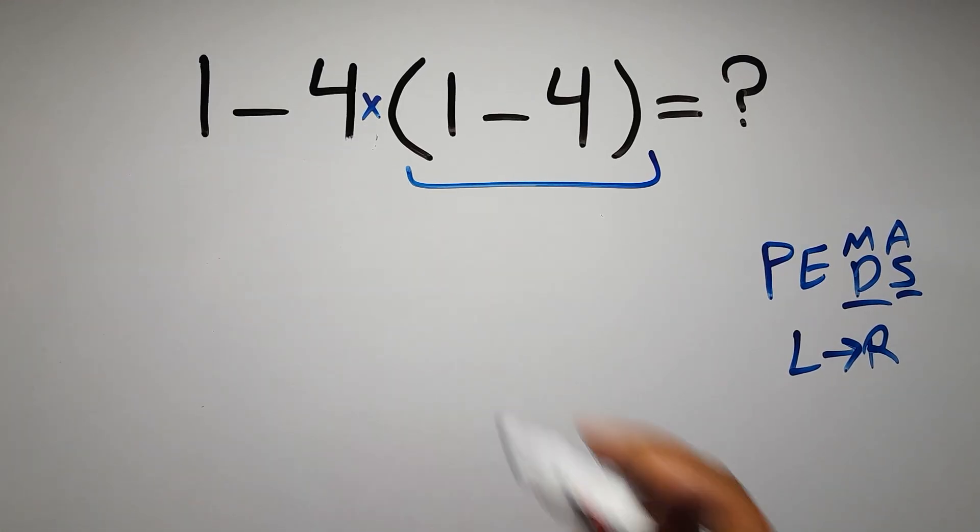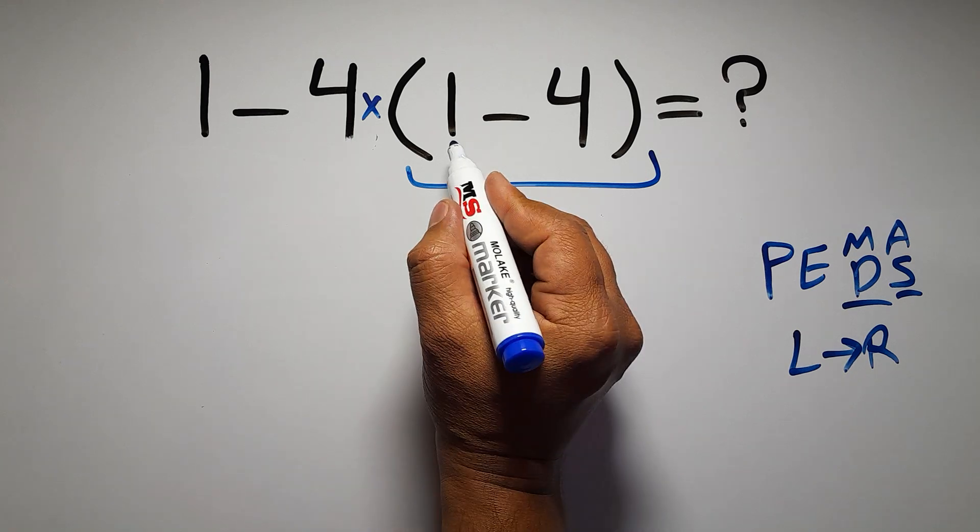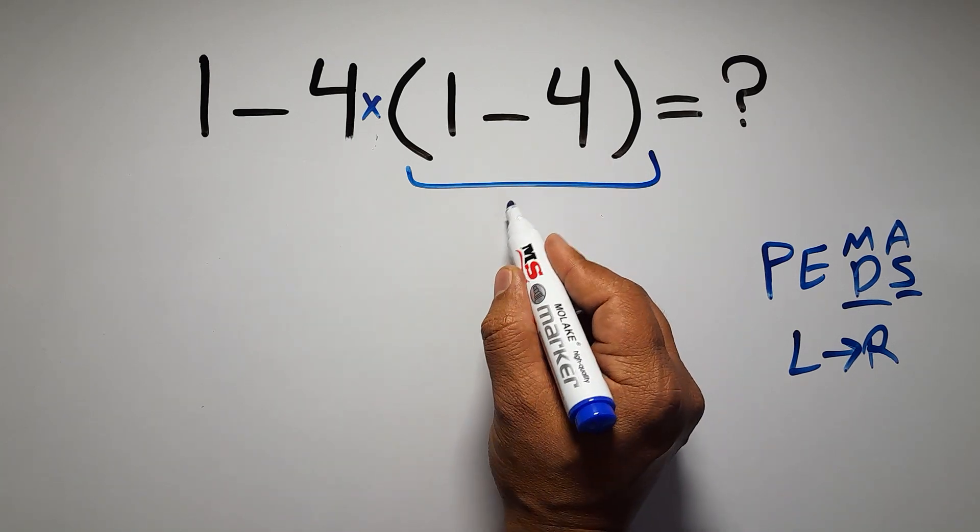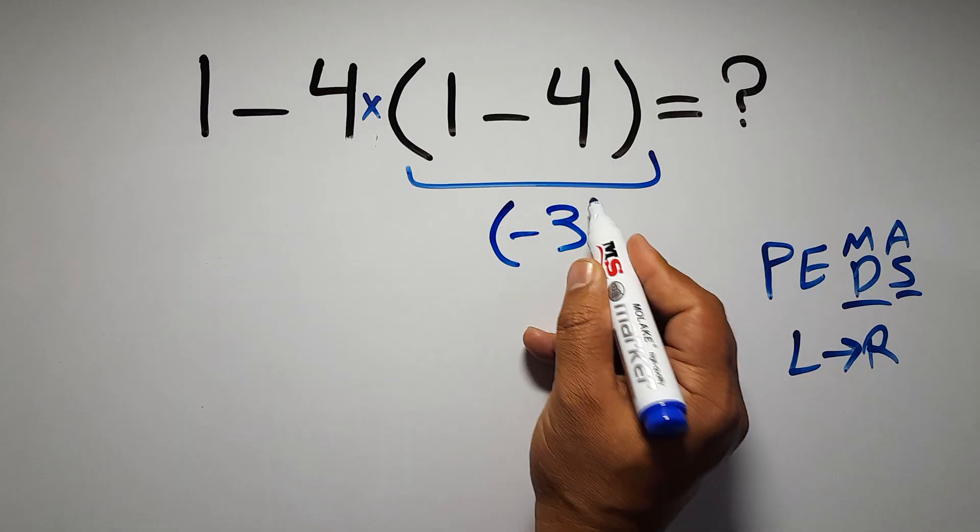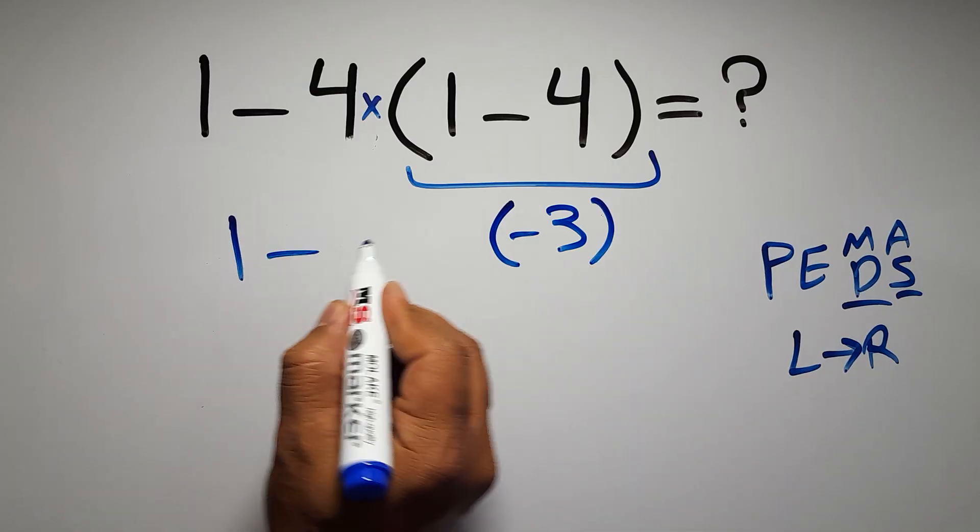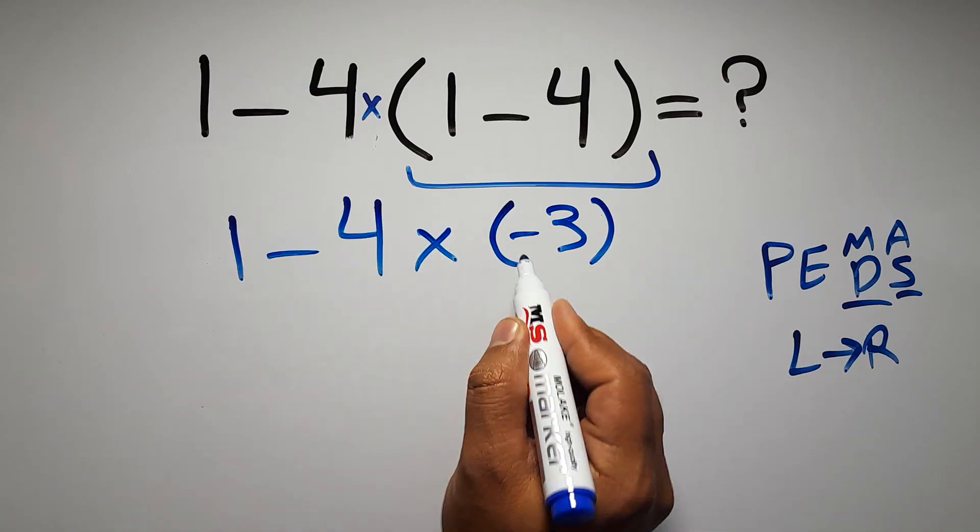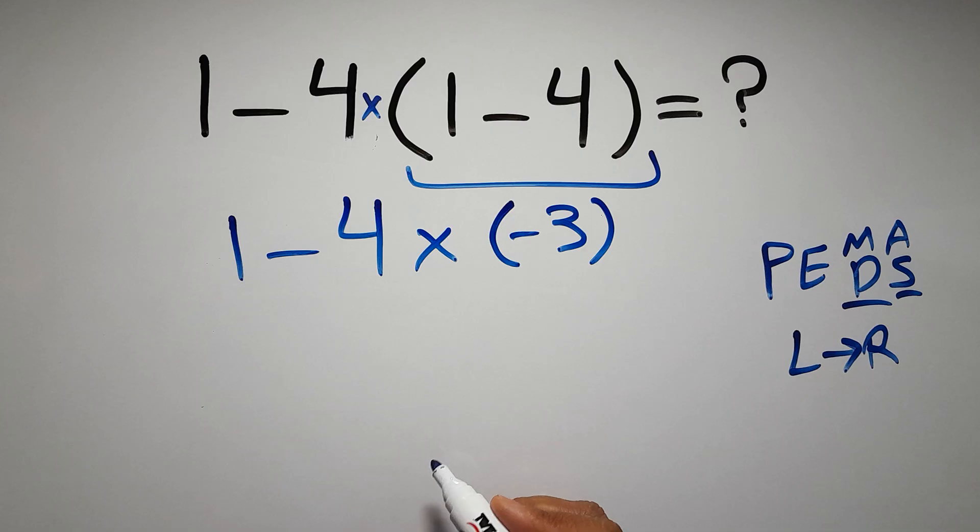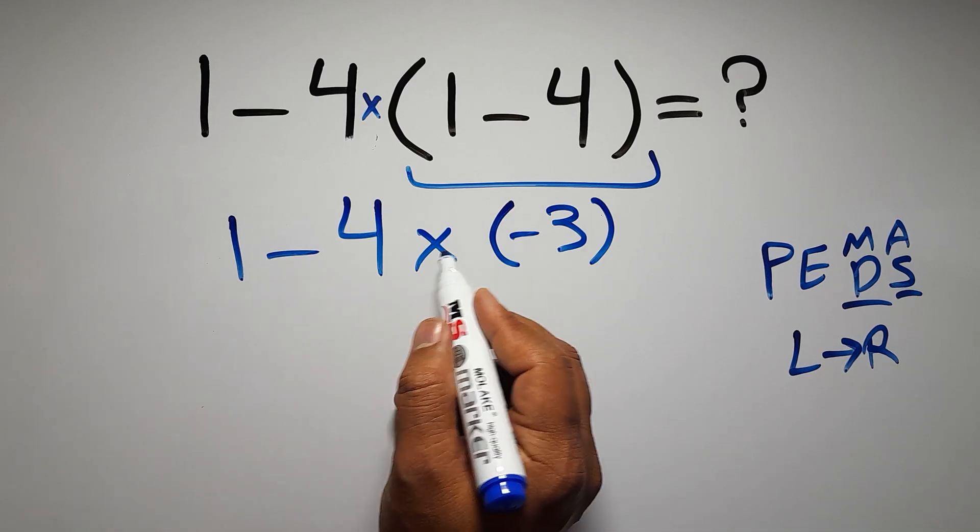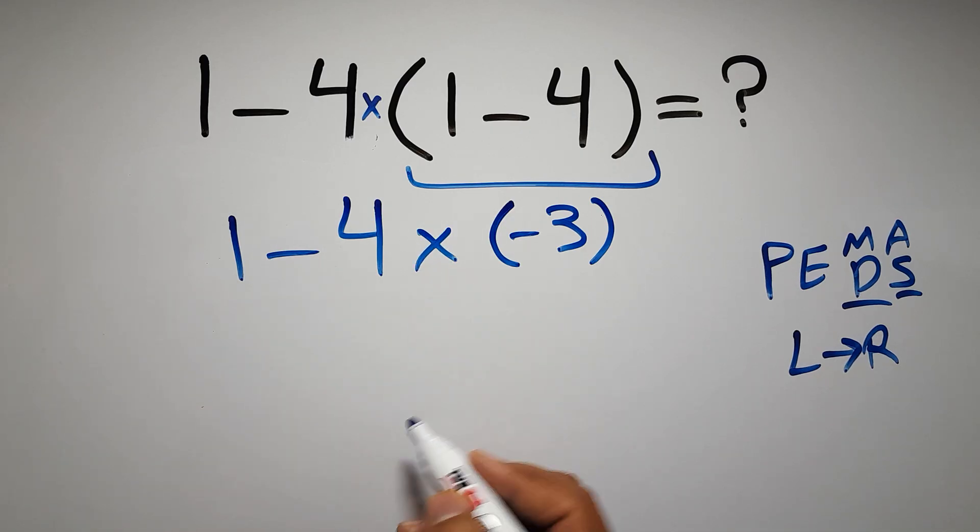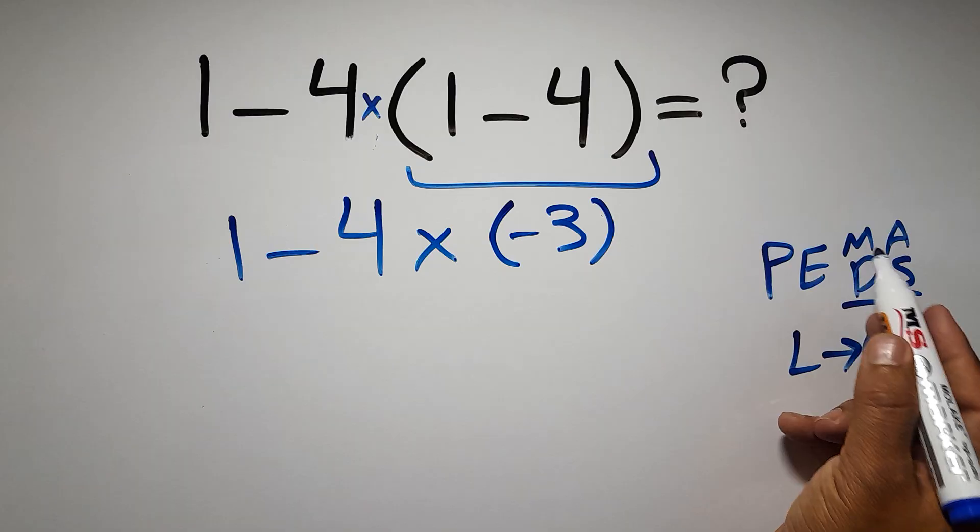So first, this parentheses. Inside this parentheses we have 1 minus 4, which gives us negative 3. So 1 minus 4 times negative 3. Now we have one subtraction and one multiplication. According to PEMDAS, multiplication has higher priority than subtraction because multiplication comes before subtraction.